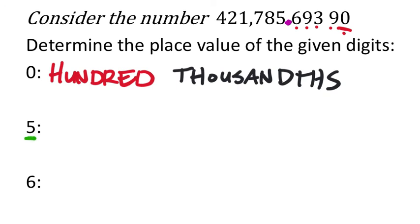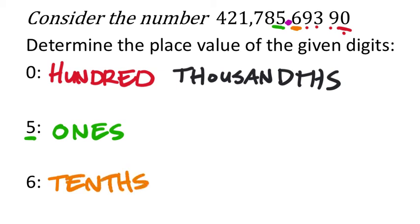Next: the five is just one place to the left of the decimal — that's the ones place value. And the six — we've already identified that as the tenths. Usually on a review it only asks for about three of these. Maybe it asks for the sevens in the hundredths, or the three in the thousandths — which we've already identified.